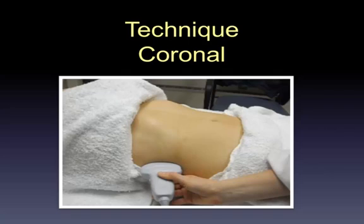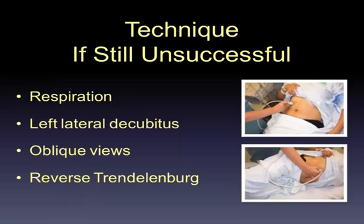Make sure you fan anteriorly because the gallbladder sits anterior to the kidney. If you still can't find the gallbladder, there are a few things that can help. A deep inhale by the patient greatly assists, though pain may limit that. You can turn the patient onto the left side, or get them in some inverse Trendelenburg — both help move the gallbladder out from under the ribcage. You can also try oblique views from different angles above or below the ribs.